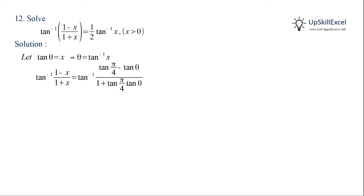We get tan inverse of (tan pi by 4 minus tan theta) by (1 plus tan pi by 4 times tan theta). This is of the format tan(a minus b), where a is equal to pi by 4 and b is equal to theta. Applying it and simplifying, we get the left hand side is equal to pi by 4 minus theta.